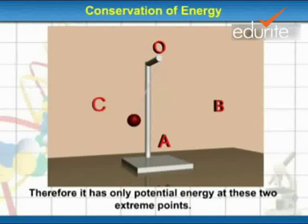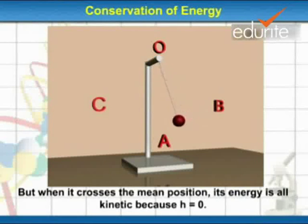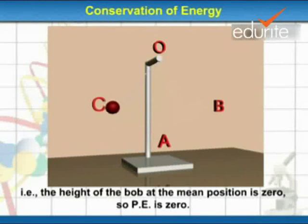Therefore, it has only potential energy at these two extreme points. But when it crosses the mean position, its energy is all kinetic because h is equal to zero. That is, the height of the bob at the mean position is zero. So potential energy is zero.